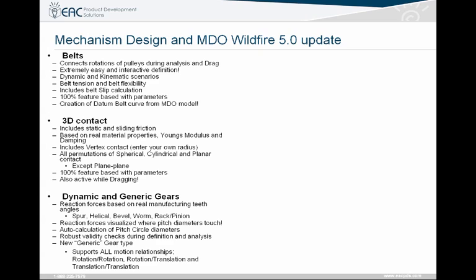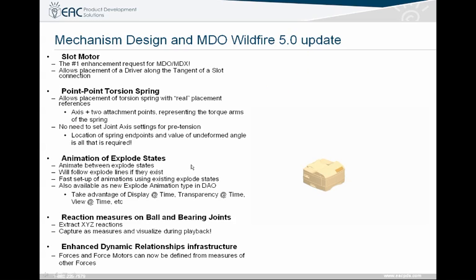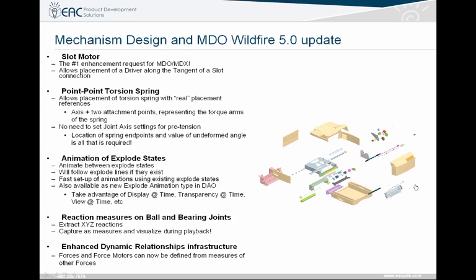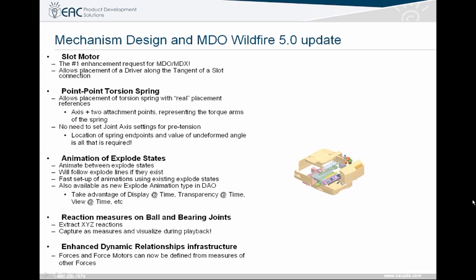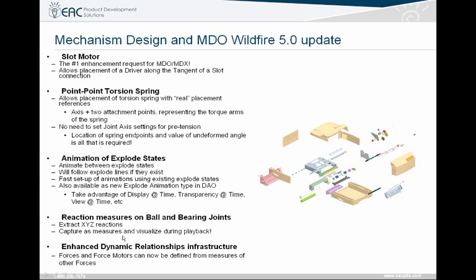One of the other areas that has really improved quite a bit in Wildfire 5 is the analysis area. Mechanism design — the ability to create belts, 3D contact, dynamic and generic gears. Probably one of the top things people have asked for is being able to create a slot motor for a design. Points-to-point torsion springs, animation of explode states — instead of having to use the animation portion of ProE, you can just animate the explode you've already created. Reaction measures on ball and bearing joints, and enhanced dynamic relationships.